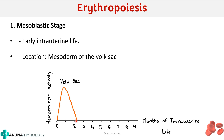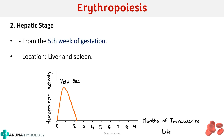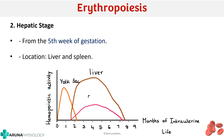Next is the hepatic stage, which occurs from the fifth week of gestation onwards. Just like the name suggests, erythropoiesis occurs in the liver and spleen. If you depict that on the graph, you can see that from around the fifth week of gestation to around the late third trimester, the liver and spleen are the site of erythropoiesis.